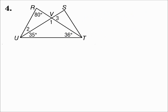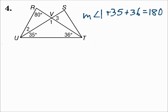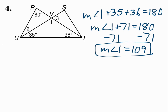For number four, it can be a little confusing where to start. Focus on each triangle and see if any gives you enough information. In the middle triangle, we know two angles — 35 degrees and 36 degrees — and the three angles add up to 180. The measure of angle one plus 35 plus 36 equals 180. 35 plus 36 is 71. Subtract 71 from each side: the measure of angle one is 109 degrees.